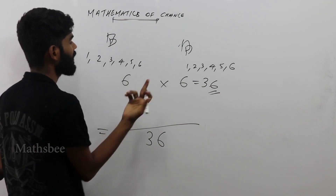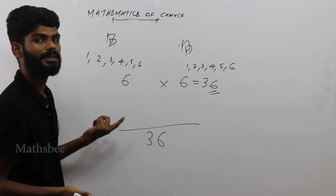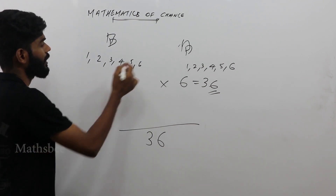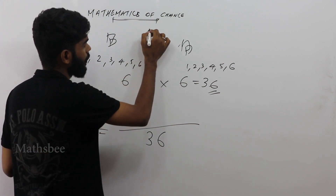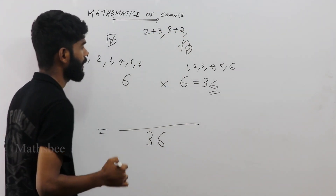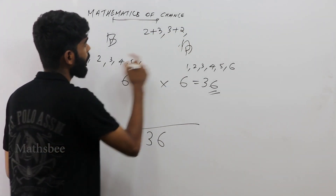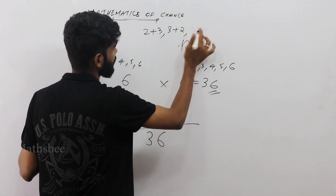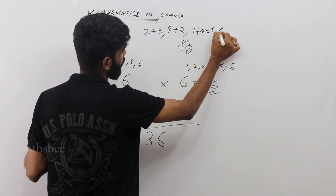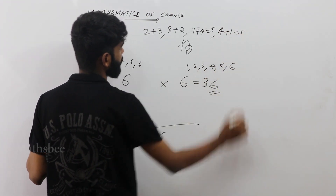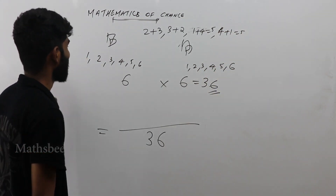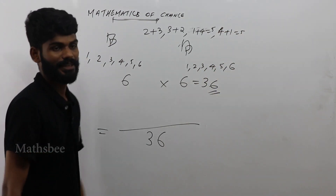The question is: what is the probability that the sum is at least 5? If we want the sum to be 5, the combinations are: 2 plus 3 equals 5, and 1 plus 4 equals 5.